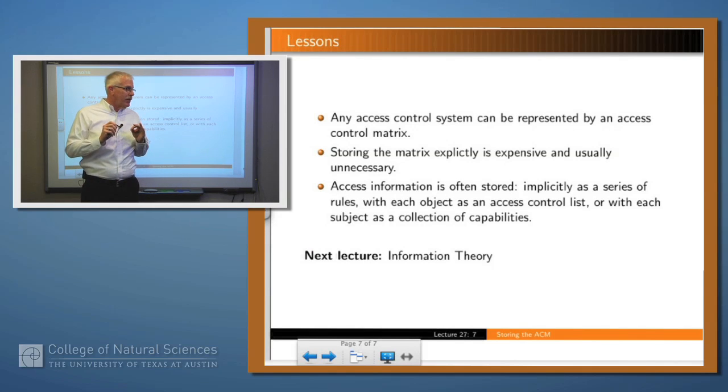So what have we learned in this lesson? Any access control policy can be represented explicitly as an access control matrix, but usually you don't want to do that. A system will take one of three approaches: either it will have a set of implicit rules by which you can compute the access rights on the fly, or it will have an access control list which stores those permissions with the objects, or it will be a capability-based system which stores those permissions with the subjects. Thank you.